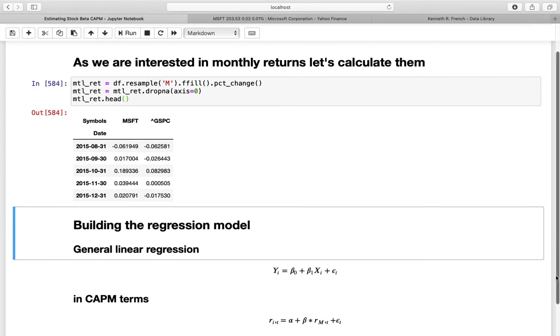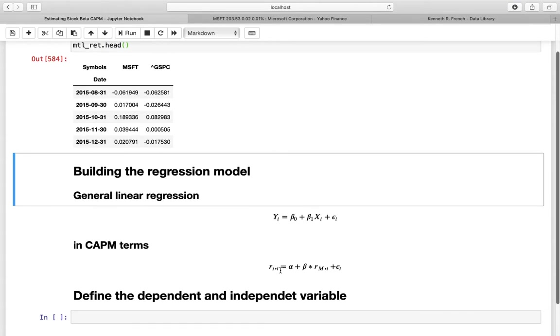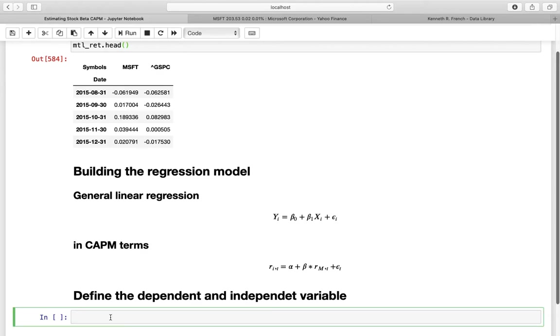As already pointed out in the beginning, a simple linear regression model consists of a dependent variable or a predicted variable. And that is defined as the intercept plus the slope coefficient times the predictor variable or an independent variable plus the error term. And in CAPM terms, we got the return of an asset equals to alpha plus beta times the market return plus an error term. Now, let's define the dependent and independent variable. And we're starting with the independent variable. That is x. And that is in CAPM terms our market return.